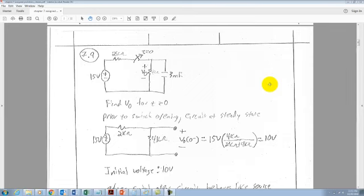In problem 7.9, you're given this circuit here with a 15-volt source, a 2-kilo-ohm resistor, a 4-kilo-ohm resistor, and a 3-millifarad capacitor. And you're told that this switch here opens at time T equals 0.